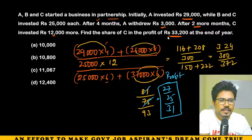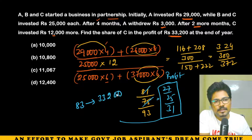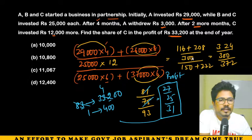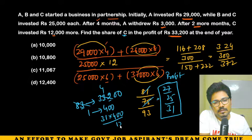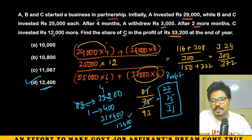Total units = 27 + 25 + 31 = 83. Total profit = 33,200. So 83 units = 33,200, meaning 1 unit = 400. C's share is 31 units × 400 = 12,400. Answer is 12,400.